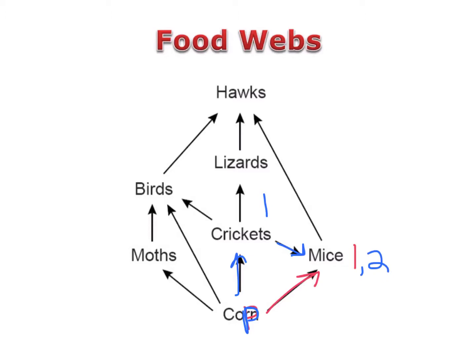Notice that this also makes mice omnivores because they're eating corn and crickets. Omnivores are an example of something that can be shown in a food web but not a food chain. Notice that the birds are also omnivores because they eat corn, mice, and crickets. This information shows birds being a part of three different food chains.